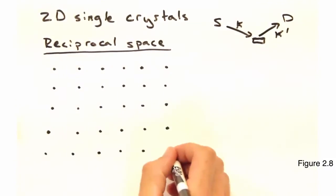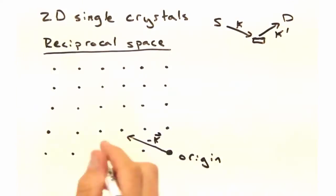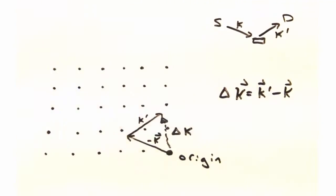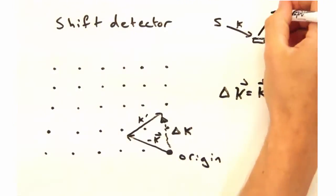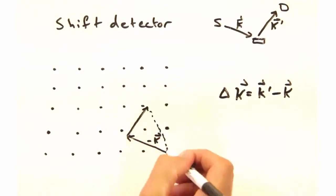The tail of our minus k vector sits at the origin. Then if we draw k prime out like so, delta k would just be this line here. But what happens as we shift our detector? Then we would need to redraw k prime and thus get a different delta k.